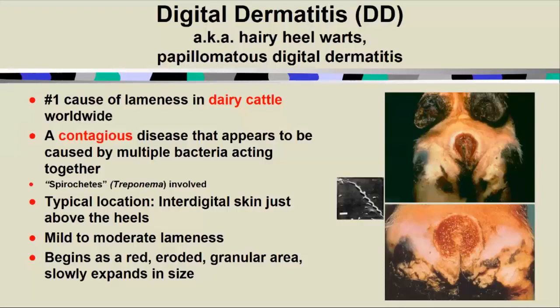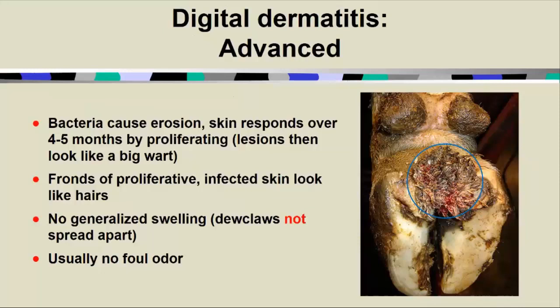The typical location, as implied by heel, is at the back of the foot, often in that interdigital space just above the heels. We occasionally get one off to one side, but it's usually right there on midline. This disease does not tend to invade into the deeper tissues like bovine foot rot, so you don't tend to see that generalized swelling. Notice those dewclaws look pretty settled in the tissue — they're not spread apart relative to the other limbs. The early lesion often looks like the surface of a strawberry, but over time it tends to develop into a more proliferative type of lesion, hence the name hairy heel wart — large fronds of proliferative infected skin that make it look hair-like. There's no foul odor and no generalized swelling like we would expect with foot rot.